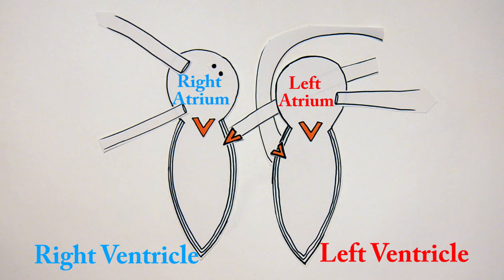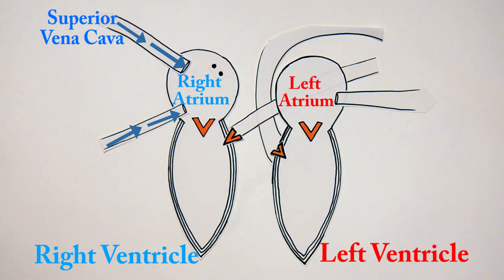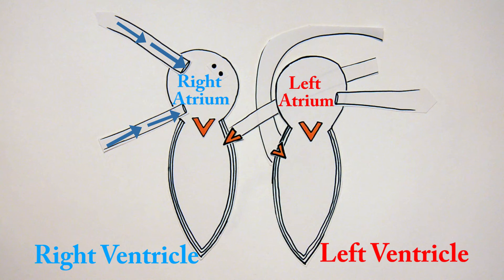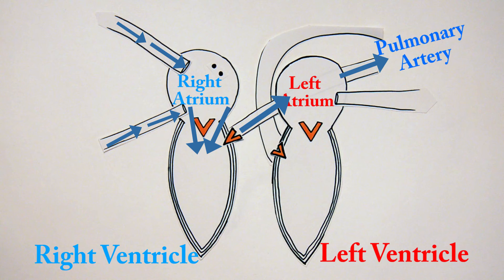We're going to start with the pulmonary circuit. Deoxygenated blood is brought into the right atrium through the superior vena cava and the inferior vena cava. The contraction of the right atrium pushes blood down into the right ventricle through the atrioventricular valve, which prevents backflow. The increase in pressure in the right ventricle causes the right semilunar valve to open, allowing blood to enter the pulmonary artery and leave the heart to get oxygenated in the lungs.